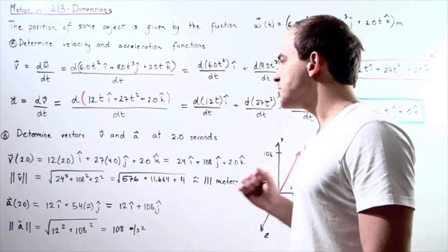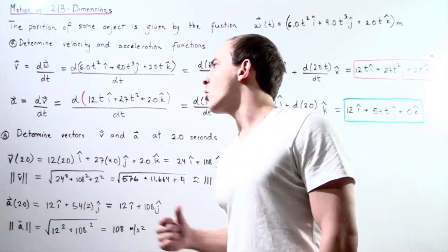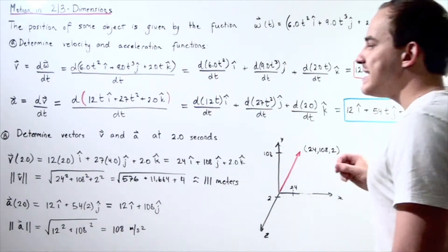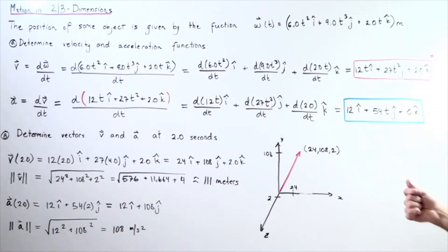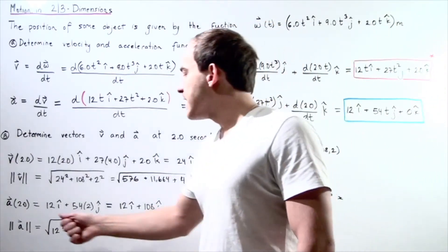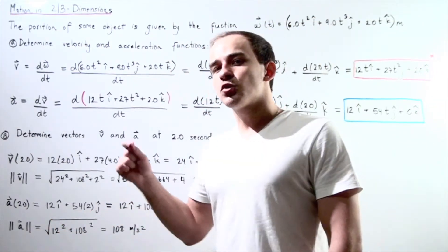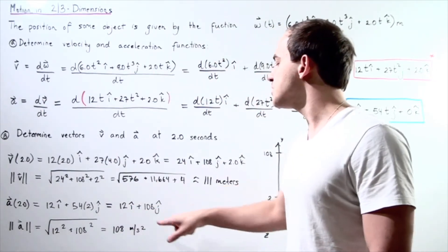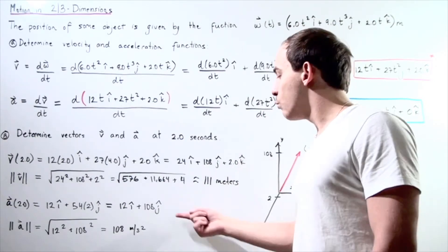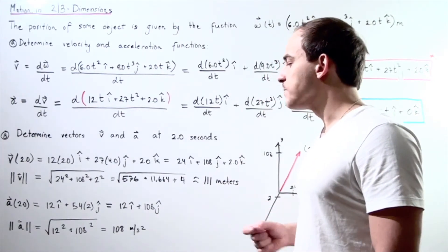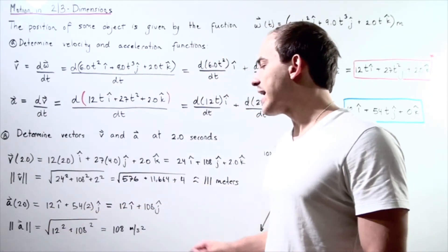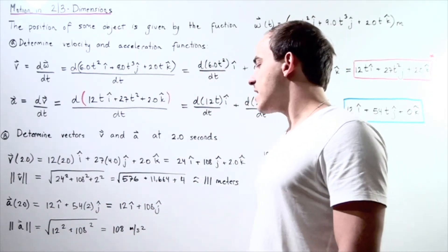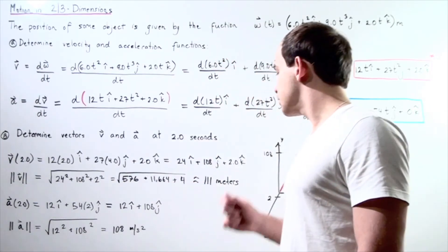Now let's find the acceleration vector at 2 seconds. Taking the acceleration function from part A and plugging in t equals 2: the 12 i-hat term has no t so it remains 12. The z component is 0, so k-hat remains 0. And 54 times 2 gives 108 j-hat. So the acceleration vector at 2 seconds is 12 i-hat plus 108 j-hat with no z component. To find the magnitude, I take the square root of the sum of the squares and get approximately 108 meters per second squared.